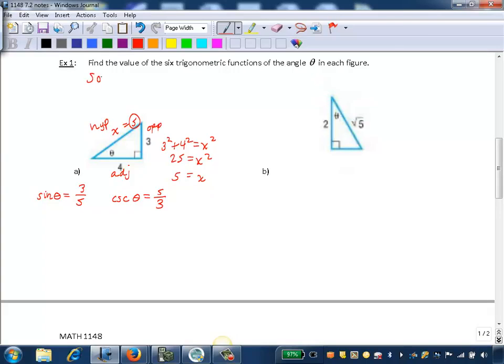Going back to SOH-CAH-TOA, we've got our sine, then we've got our cosine, C-A-H. Cosine of theta is the ratio of the adjacent side to the hypotenuse, so that's going to be 4 fifths.